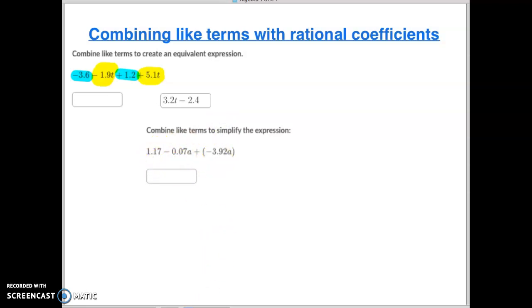Again, I'm going to take a look at my variables first. I have negative 0.07a and then plus negative 3.92a. If I have a negative here and a negative here, we always add those together, so that would be negative 3.99a.